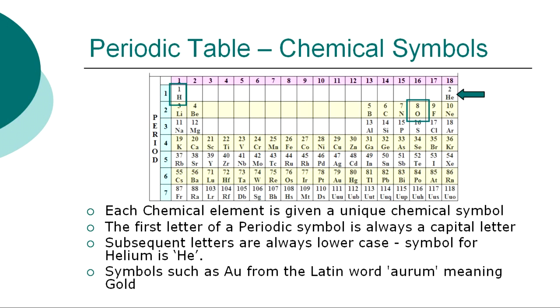Some Periodic Symbols are not immediately recognizable. For example, the Periodic Symbol for gold is Au, from the Latin word aurum meaning gold.